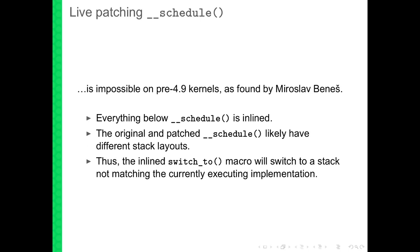The next topic is live-patching the scheduler, which is not possible. My live-patching colleague Miroslav found this: the reason is that everything below schedule is inlined, meaning anything below the schedule function cannot be F-traced or live-patched. If you were to live-patch schedule itself by copying everything including every inlined function, the original and the live-patch replacement would have different stack layouts — GCC can do whatever it likes there. So if the switch_to macro would switch from a live-patched stack to an original stack that doesn't match the currently executing implementation, that would not be good.